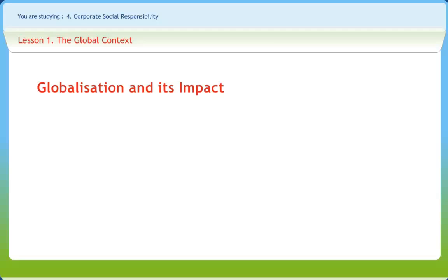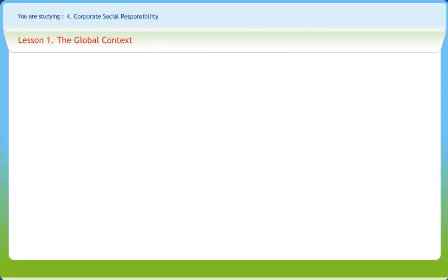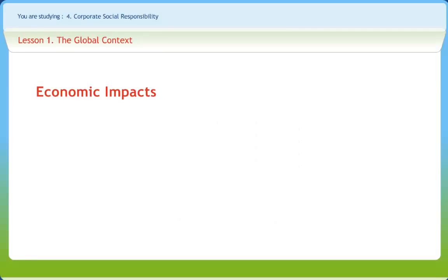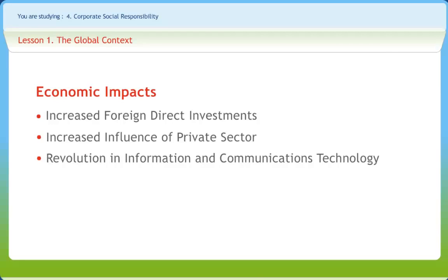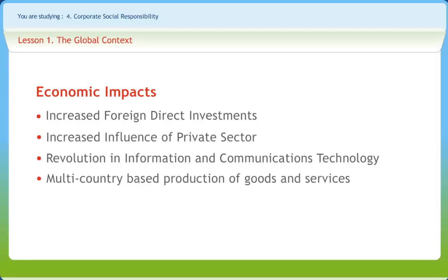The ILO report identifies two types of impacts of globalization: economic and social. As an economic impact, liberalization and expansion of international trade has led to an increase in FDI investment and has also brought changes in the nature of financial flows by integrating the financial market. There is a visible change in the governance structure of the global financial systems with an increase in the influence of the private sector. Revolution in information and communication technology and declining transportation costs have resulted in multi-country based production of goods and services, which are technically and economically feasible. According to ILO, production processes are unbundled and located across the world to exploit economic advantages arising from differences in costs.